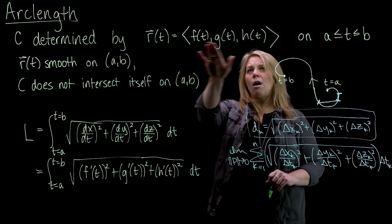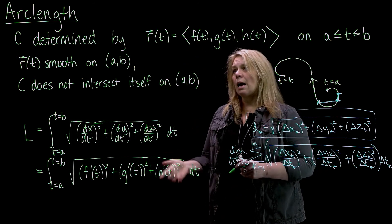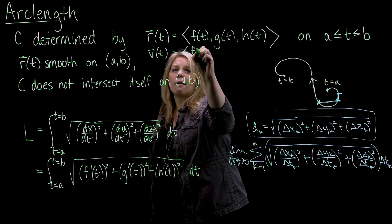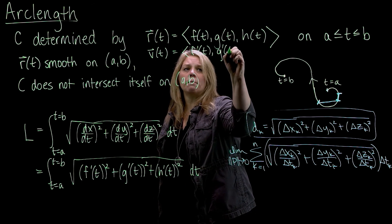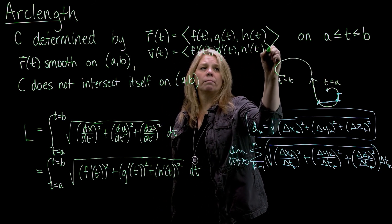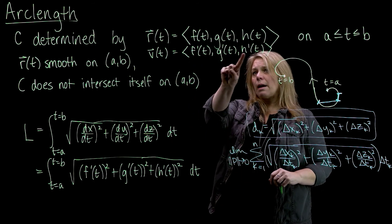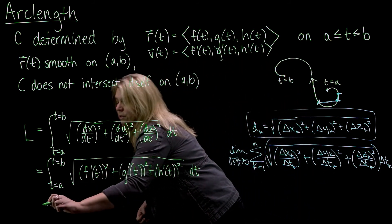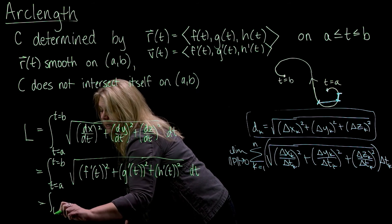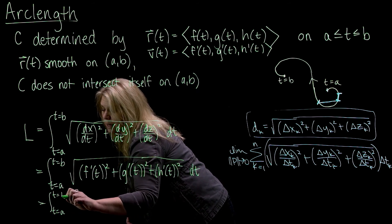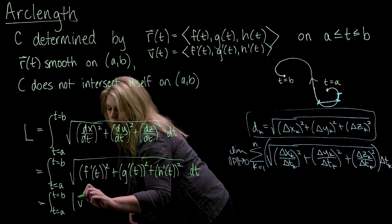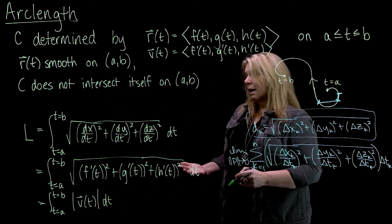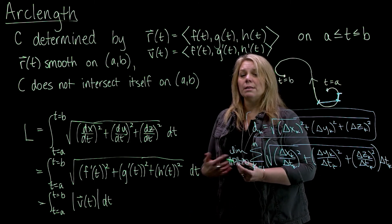Another way that this sometimes is written. So if I have r of t given by f g and h, then I also have r prime of t or v of t given by f prime g prime and h prime. And if you think about that and look at this, you might notice that this looks like a magnitude of a vector. So sometimes you'll also see this written, the integral from t equals a to t equals b. And here we'll have magnitude of v of t. This is a kind of handy shorthand way to write this formula.